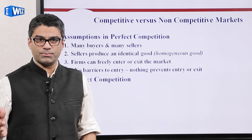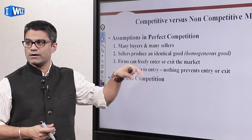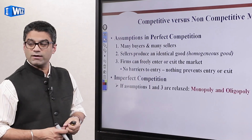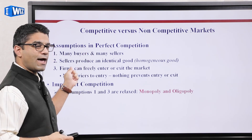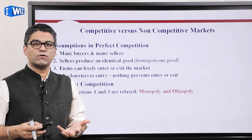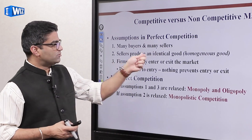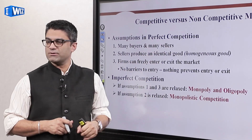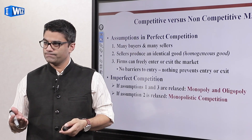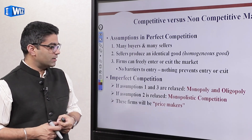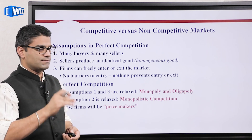When we talk about imperfect competition — and all three of the other market structures fall under imperfect competition — some of these assumptions are not met. If you relax assumptions one and three, meaning you don't have many sellers (just one or a few) and there's no free entry or exit, then we have monopoly and oligopoly. If we relax assumption two — that producers make identical goods — then we have monopolistic competition. Each of these markets has some degree of market power, making firms price makers.